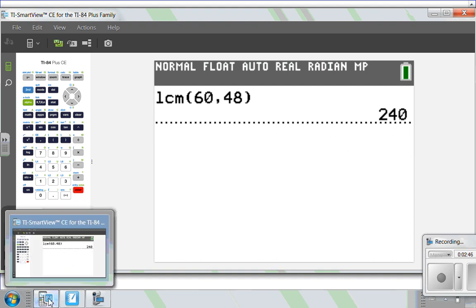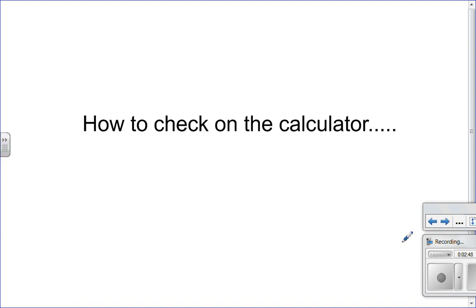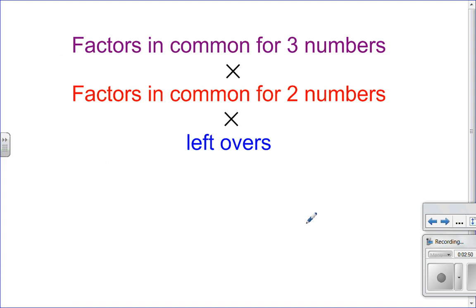Okay, let's look at how we do lowest common multiple when I have three numbers. So three numbers, do the prime factorization. Multiply factors in common for three numbers by factors in common for two numbers by all of the leftovers.